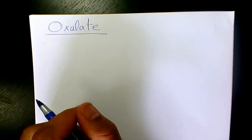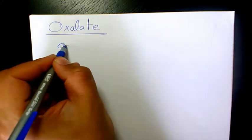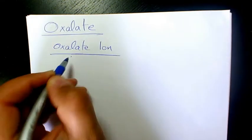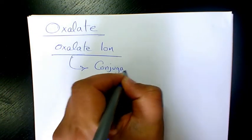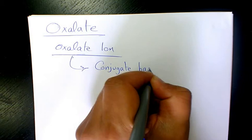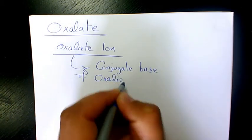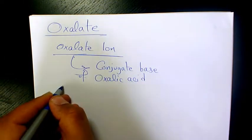What's up guys, this is Massey. Welcome to another video. In this video I want to talk about oxalate or oxalate ion. This ion is basically the conjugate base of oxalic acid.